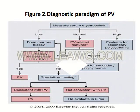This diagnostic paradigm for polycythemia vera: if we suspect polycythemia vera, we measure serum erythropoietin. If it is high, evaluate for secondary polycythemia. If it is low, proceed to bone marrow biopsy. If the bone marrow biopsy shows histology characteristic for polycythemia vera, confirm the diagnosis. If the histology is not characteristic, proceed to specialized testing such as JAK2 mutation analysis. If consistent with polycythemia vera, the final diagnosis is confirmed. If not consistent, re-evaluate the patient in three months.